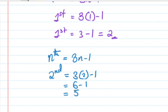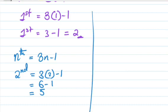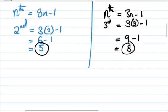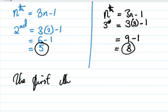To find the third term, the nth term is 3n minus 1. We put n equals 3, so the third term equals 3 times 3 minus 1. That's 9 minus 1, so we get 8.